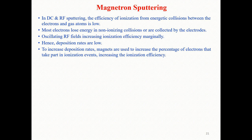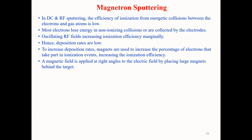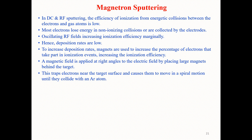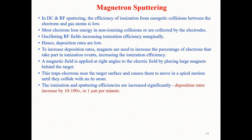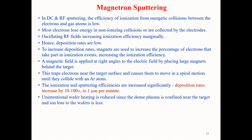What we are interested in is increasing the deposition rates. Magnets are used to increase the percentage of electrons that take part in ionization events, increasing the ionization efficiency. For this purpose, a magnetic field is applied at right angles to the electric field by placing a large magnet behind the target. This traps electrons near the target surface and causes them to move in spiral motions until they collide with argon atoms. As a result, ionization and sputtering efficiency increases significantly, meaning the deposition rate increases by 10 to 100 times, up to 1 micron per minute.